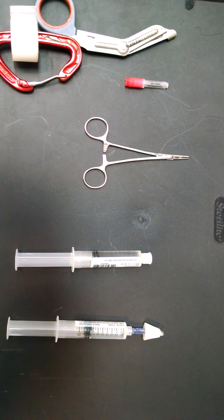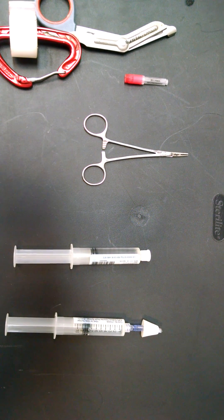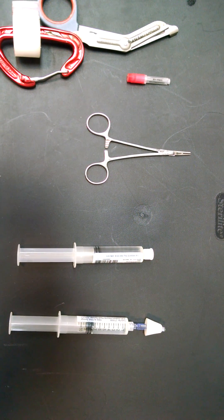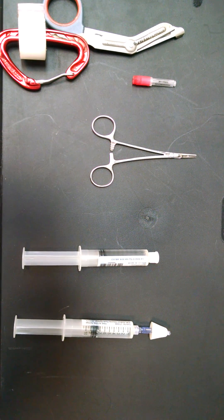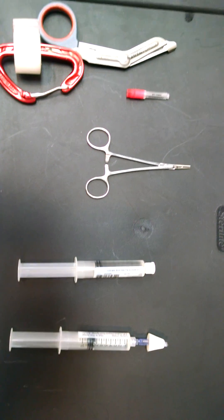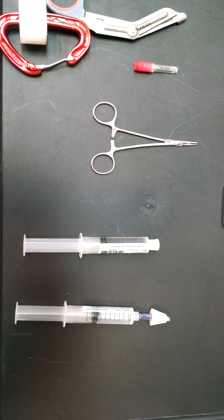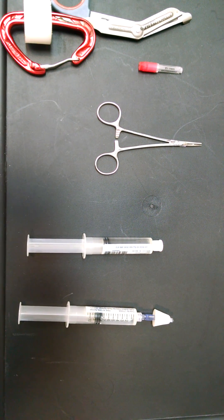I'm going to show you how to make an improvised mucosal atomizer device, or MAD, using only a 25-gauge needle or a larger gauge, such as a 27-gauge. It essentially atomizes a medication very similar to the MAD device.